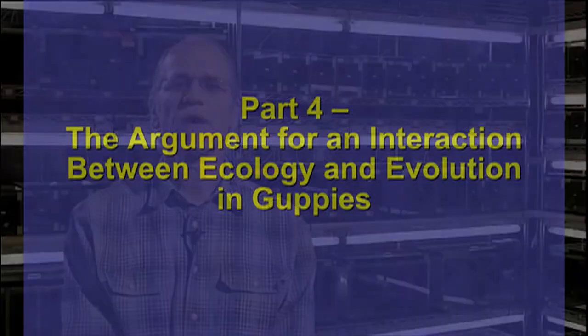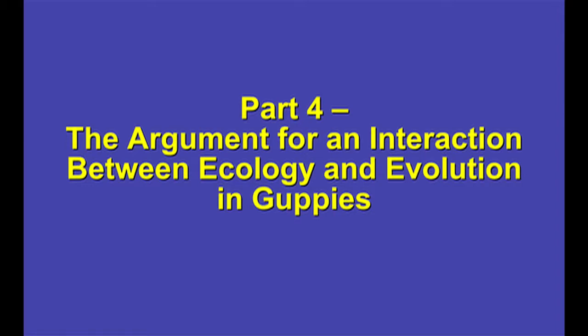Now I've come to the fourth and final part of my introduction to my study system, where I present an argument for the interaction between ecology and evolution in guppies. We began with an interaction studied in an artificial laboratory environment in a highly simplified ecosystem. And I want to remind everyone that this work, from beginning to end, has involved a large number of collaborators. What we're doing in the current project is trying to take ideas developed in adaptive dynamics theory and the results of laboratory experiments and apply them in nature. What I'll present now is an argument for why it's reasonable to expect an interaction between ecological and evolutionary processes in guppies.